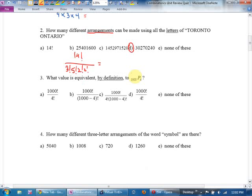Number three, what value is equivalent by definition to 1000P4? So, we said NPR on your formula sheet was N factorial all over N minus R factorial. So, 1000P4 would be 1000 factorial all over 1000, take away four, 996 factorial. It would be 1000 times 999 times 998 times 997. It would be that. Oh, B, yes? I almost said none of these. And then I went, oh, wait a minute. They gave it to me in that notation. Almost fooled me.